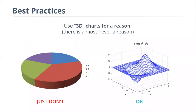3D charts — I am strongly against these, and most people in the data visualization world are, especially when it comes to pie charts. When we try to make an object appear three-dimensional on a two-dimensional surface, we have to employ artistic techniques like foreshortening and other types of distortion. What that does is make angles even more inaccurate and even harder for people to interpret.